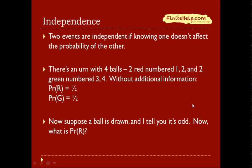Now there's an urn with 4 balls, 2 red numbered 1 and 2, and 2 green numbered 3 and 4. Without additional information, here is the probability of red and green, both 1/2.